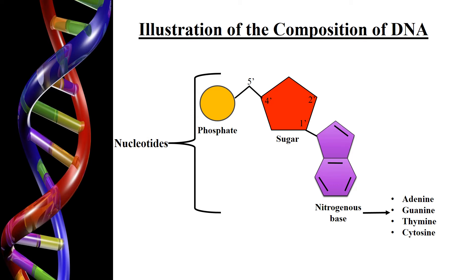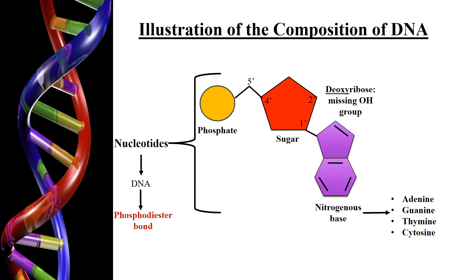Each nucleotide is made up of a sugar, phosphate, and nitrogenous base, and these nucleotides that make up the DNA are attached to each other with the help of phosphodiester bonds. The sugar in the DNA molecule is known as deoxyribose because it has a missing hydroxyl group at the 2-prime carbon of the sugar molecule, and thus the nucleotides in the DNA molecule are known as deoxynucleotides.